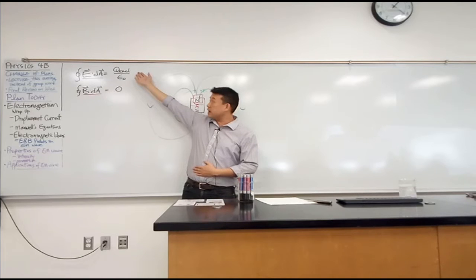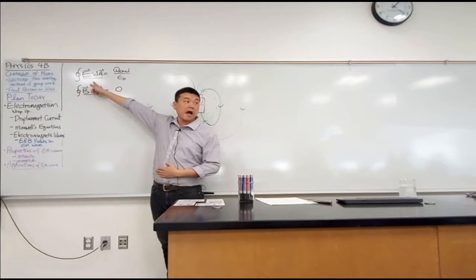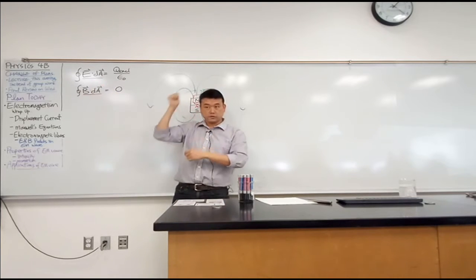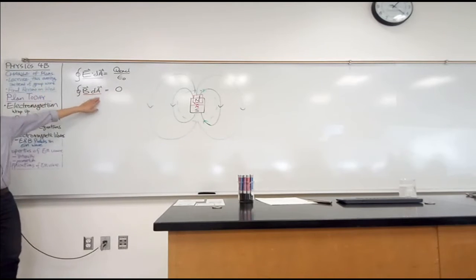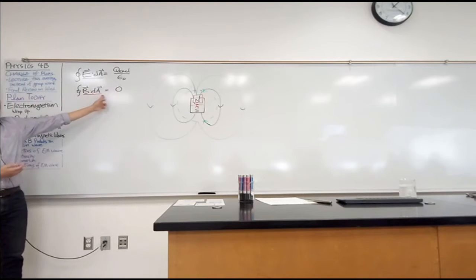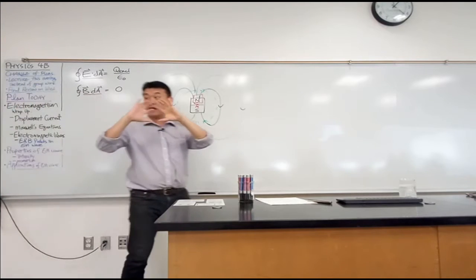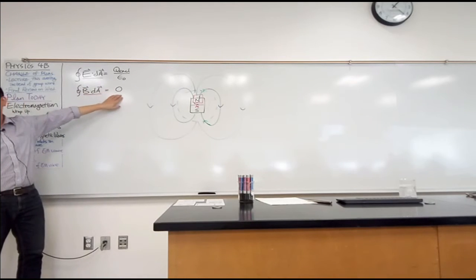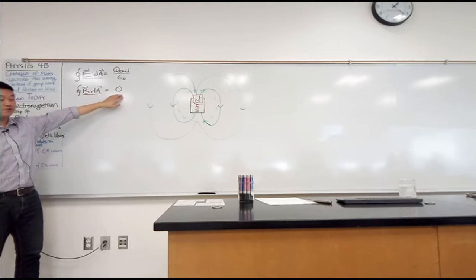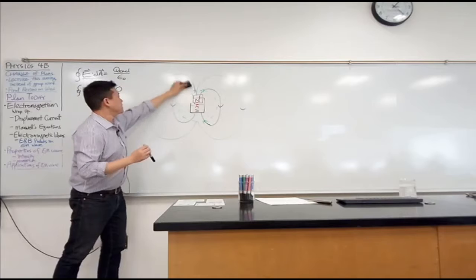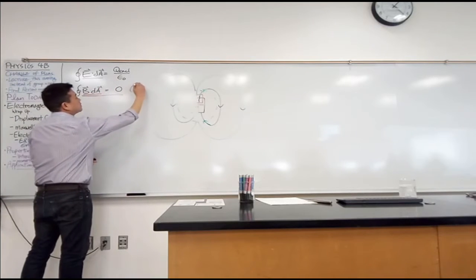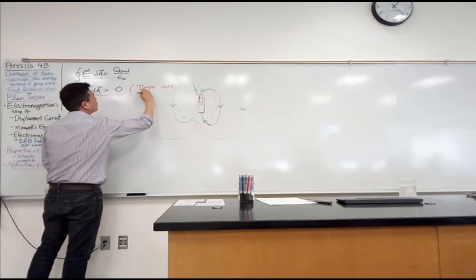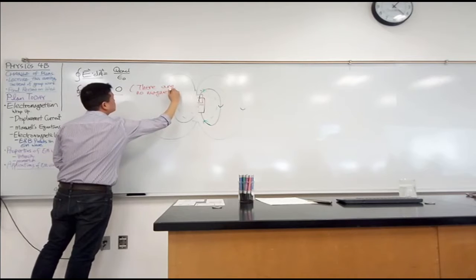Gauss's law for electric field is a way of counting how many charges are enclosed within a surface, as you saw with the electric field lines. This other equation — calculating the magnetic flux integral — is a way of counting how many magnetic monopoles are enclosed within the surface. With the magnetic field, it just says you get zero, because despite numerous search efforts, people have found no magnetic monopoles. So what this statement means is: there are no magnetic monopoles.